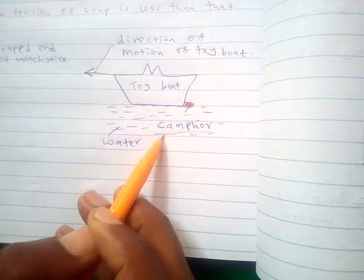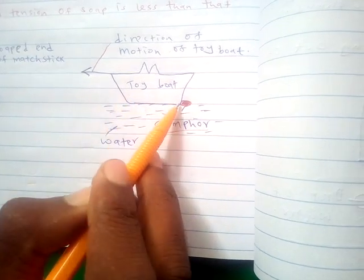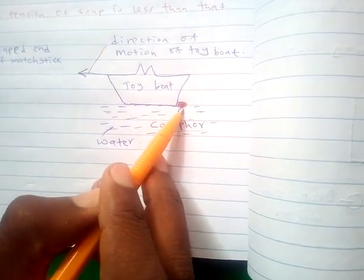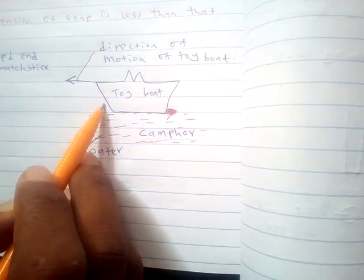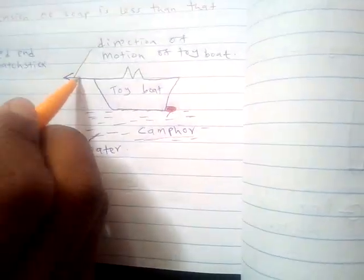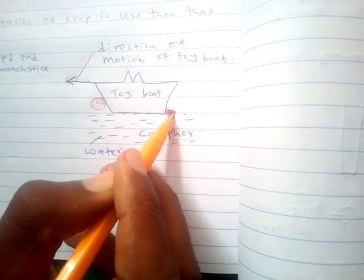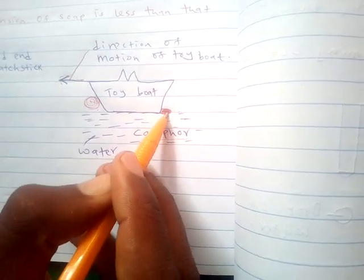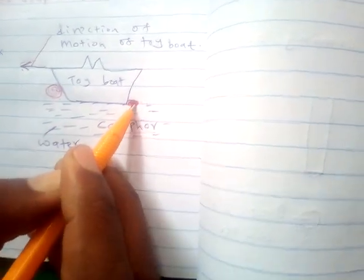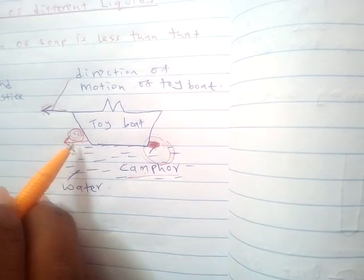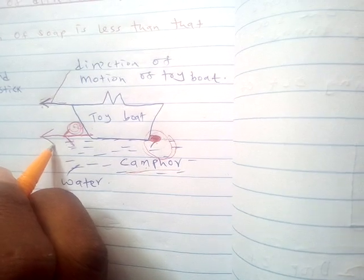A similar experiment can be carried out using a toy boat with camphor. Camphor is also an impurity that lowers the surface tension of water. When the boat with camphor on one side is placed on water, the camphor lowers the surface tension on that side, so the stronger surface tension on the other side pulls the boat in the opposite direction. The same effect can be achieved using a hot metal piece, since temperature also reduces surface tension.